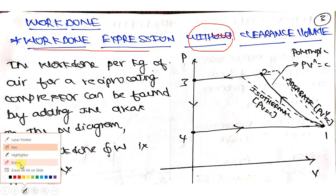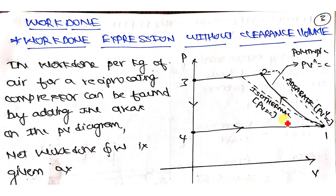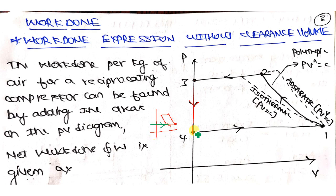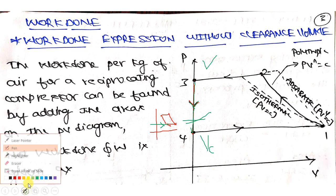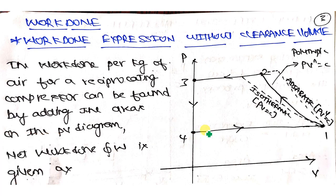This is your reciprocating air compressor without clearance volume. How do we conclude that it is without clearance volume? The process three to four takes place on the coordinate itself - on the x-axis. If clearance volume was present, it would take place a little bit away from the axis. But here, process three to four is on the coordinate line, so there is absolutely no chance of Vc coming into existence. That is how this PV diagram represents a reciprocating air compressor with no clearance volume.